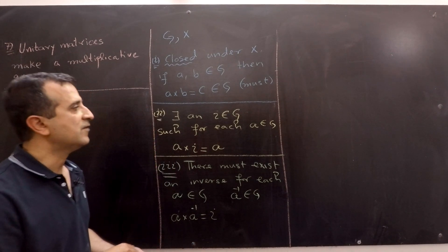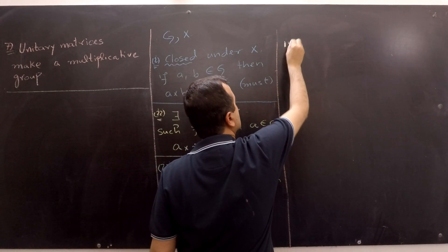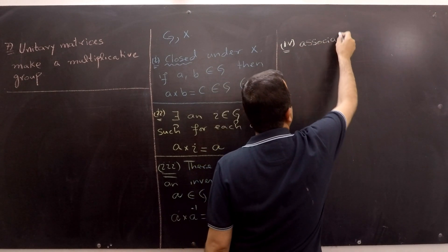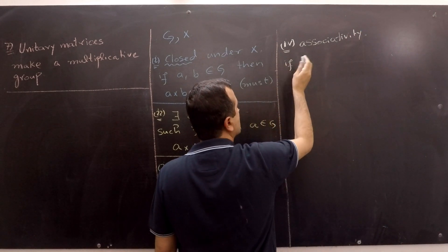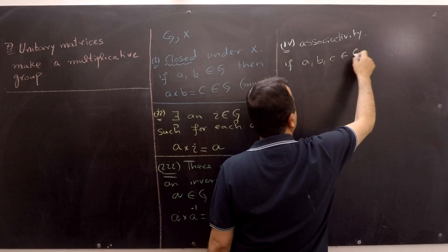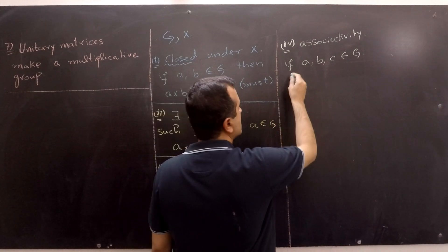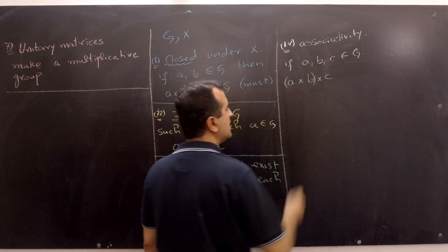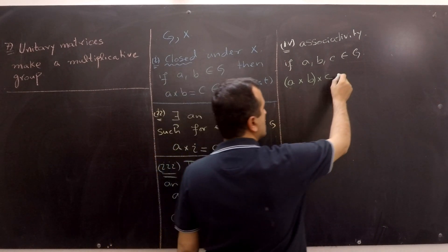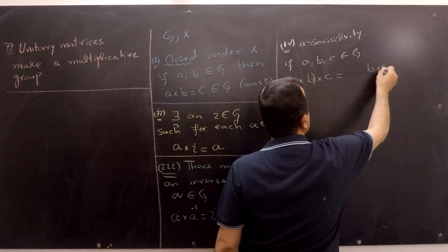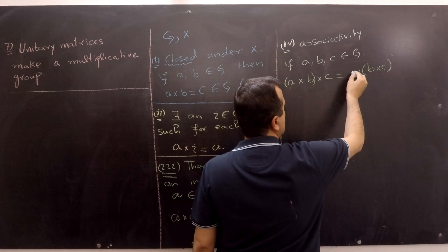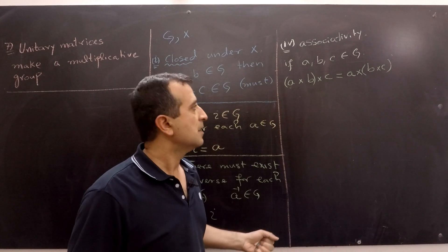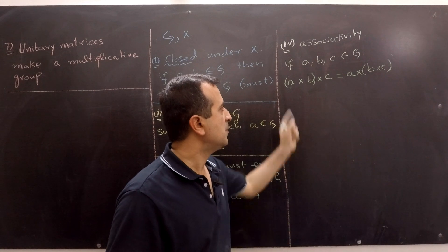The fourth and final property states that the order of brackets does not matter — we call this associativity. If A, B, and C are members of group G, we can multiply A with B first and then multiply the result with C. Or we can first multiply B with C and then multiply A with that result. The order of A, B, C matters because they may not be commutative; however, we can change the order of parentheses as we like.